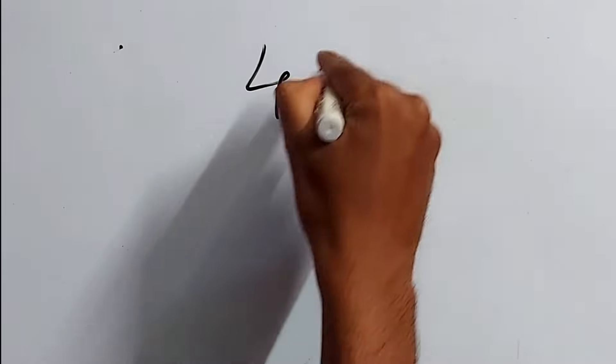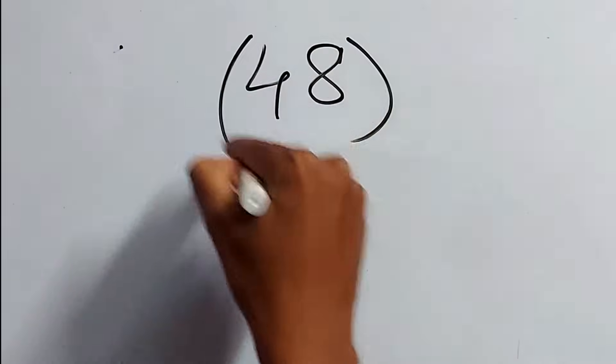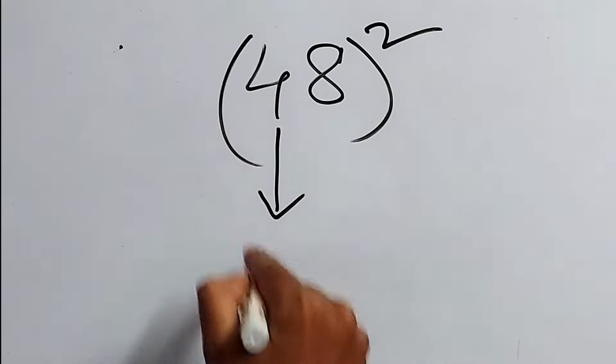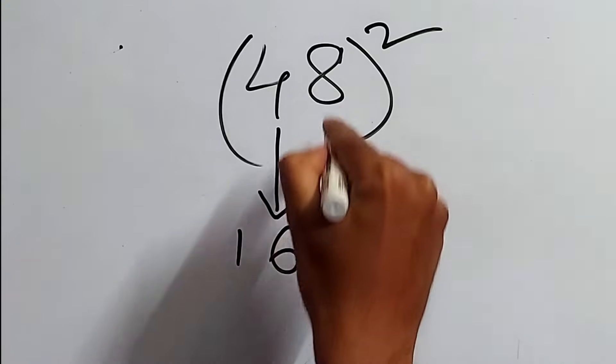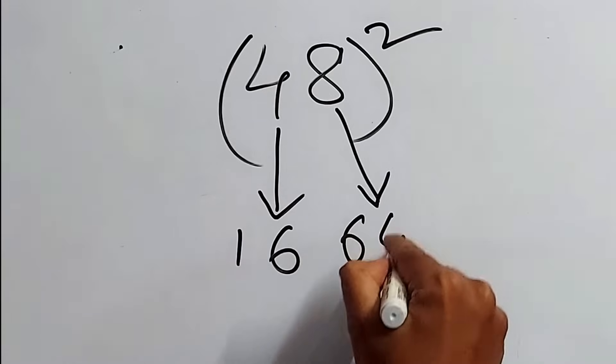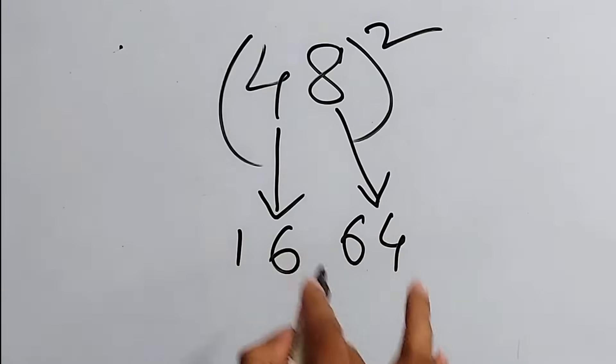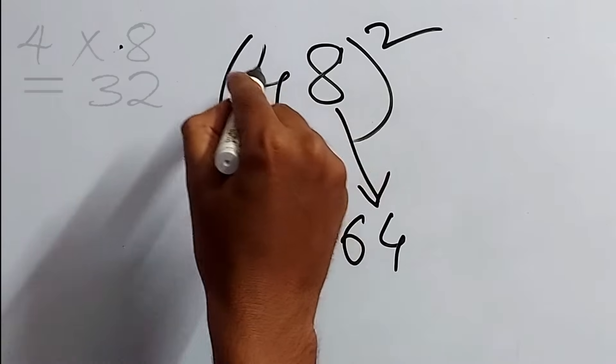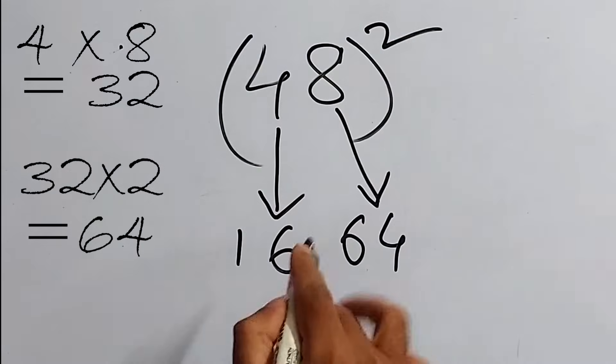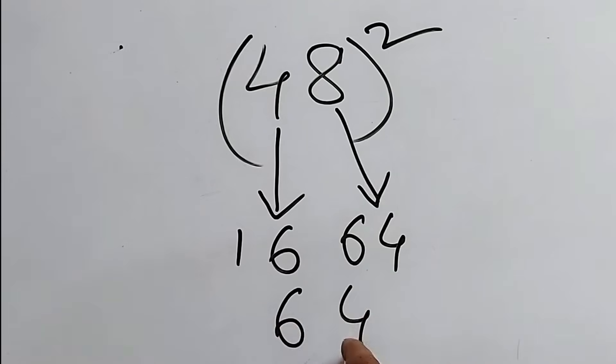Let's find the square of 48. The simplest way is, just get the square of this 4, that is 16, and square of this 8, that is 64. And the funniest part is, just multiply this 2, that is 4 into 8 is 32, 32 into 2 is 64, and write this 64 right here. The answer should be written leaving one place, that is this place.